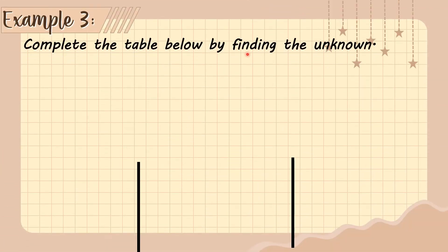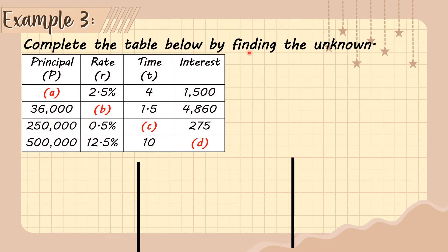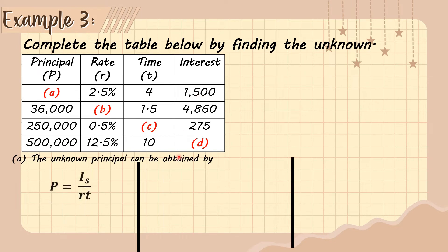Example number three: Complete the table by finding the unknown. For letter A, the principal is unknown. We are given the rate of 2.5 percent, the time of 4 years, and the interest of 1,500. The formula for the unknown principal is P = I_s ÷ (r × t).